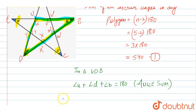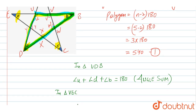Then we take triangle VEC. In triangle VEC, we can say angle V plus angle E plus angle C equals 180°, again by the angle sum property. This is equation 3.